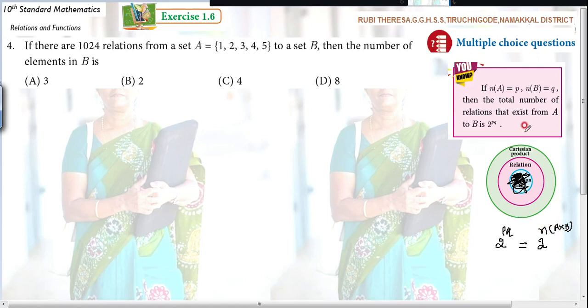Because already we studied, isn't it? N of A is equal to P, N of B is equal to Q means N of A cross B is equal to P into Q. Don't be confused with these two because relation is a subset of the product.